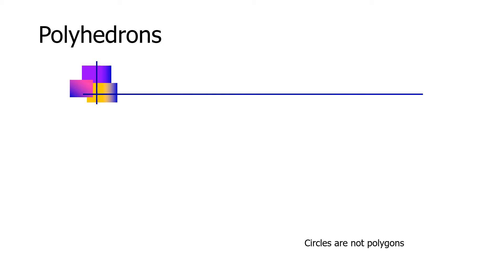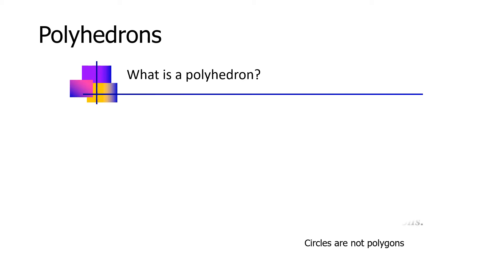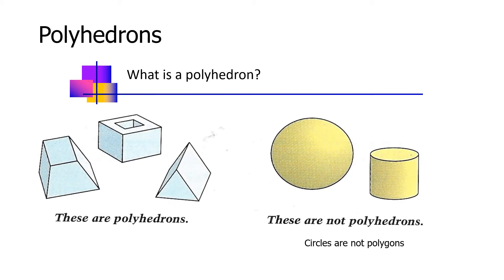What is a polyhedron? So these are polyhedrons, and these are not polyhedrons. Remember, circles are not polygons.